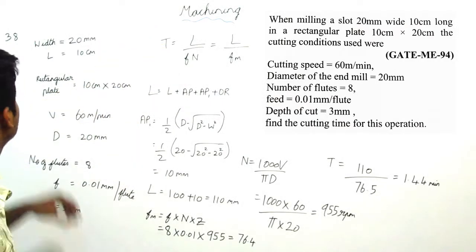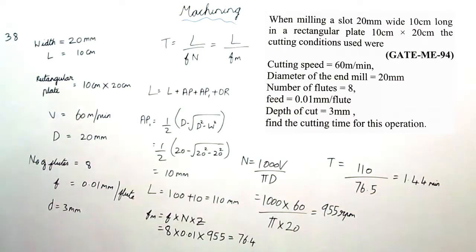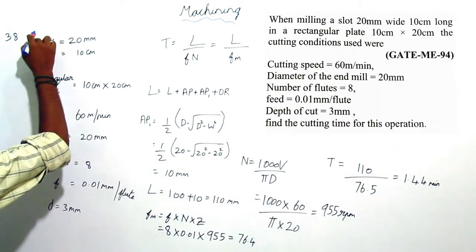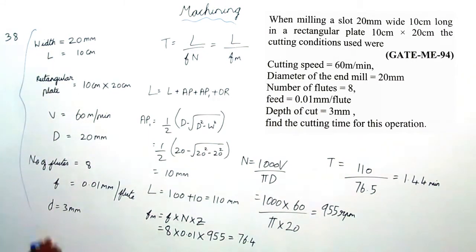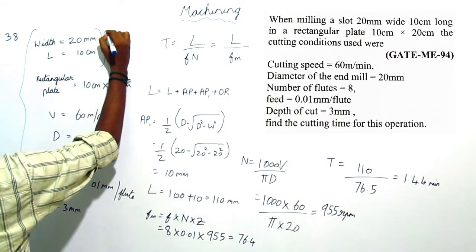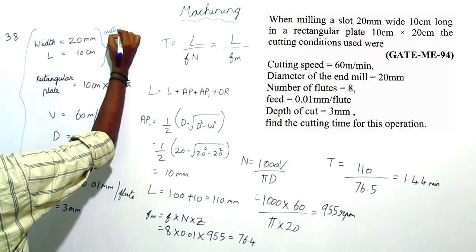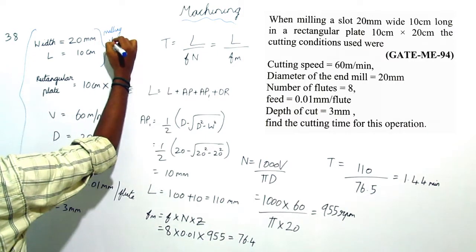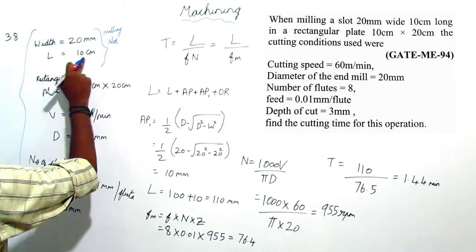In machining process problem 38, you have to find total time taken for this milling operation. These are the given data. This is milling slot, dimensions of milling slot. The width is 20 mm and length is 10 cm.